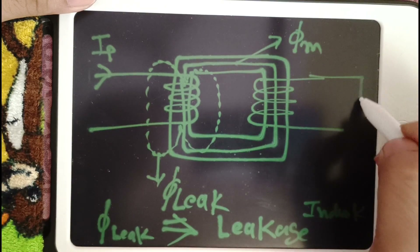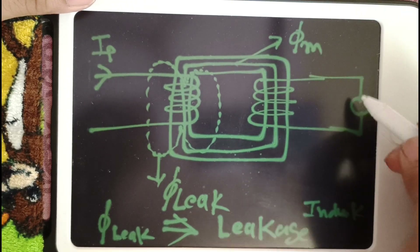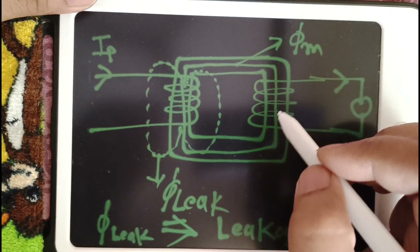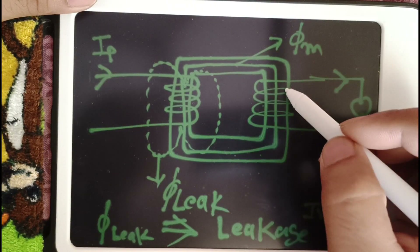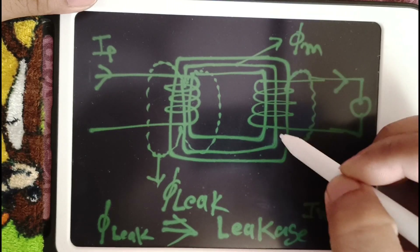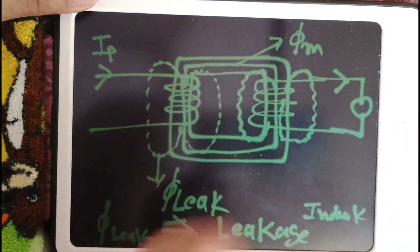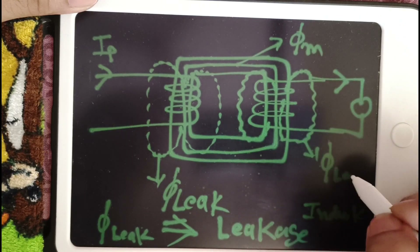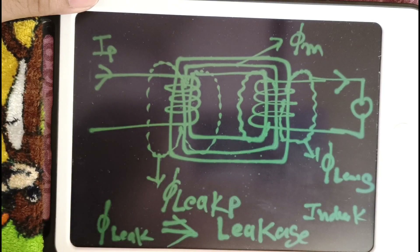Whenever you close the circuit in the secondary side — if you connect the load — current will flow in the secondary side. This current also produces a flux inside the winding, and some of that flux also does not link with the primary winding. So that is also called leakage flux — phi leak on the secondary side. Both of these fluxes are leakage flux.